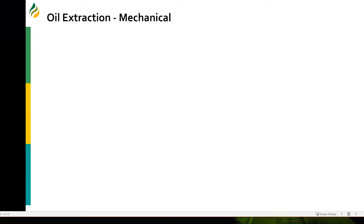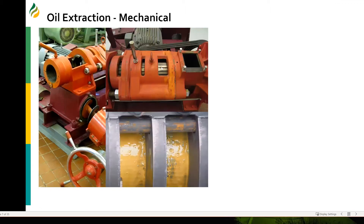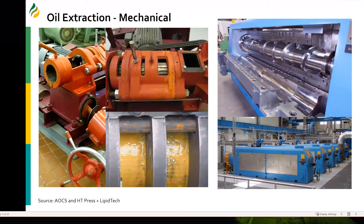There are two major processes used to recover oil from oilseeds. The first is mechanical extraction, where cracked, flaked, and conditioned oilseeds are fed into a barrel, and a screw squeezes the oil out through slats. Here in the bottom picture you can see soybean oil coming out through the slats, and on the right is a commercial facility set up for mechanical extraction of soybean oil.